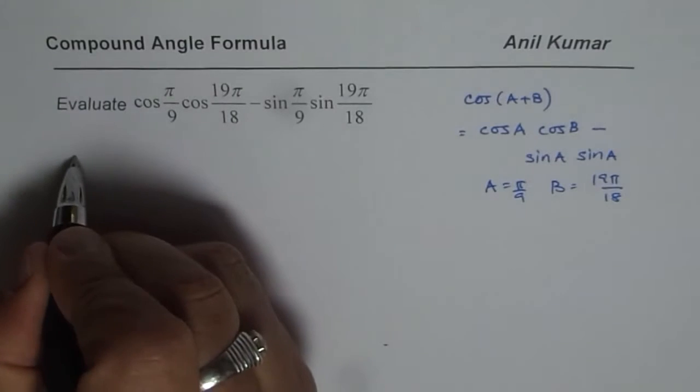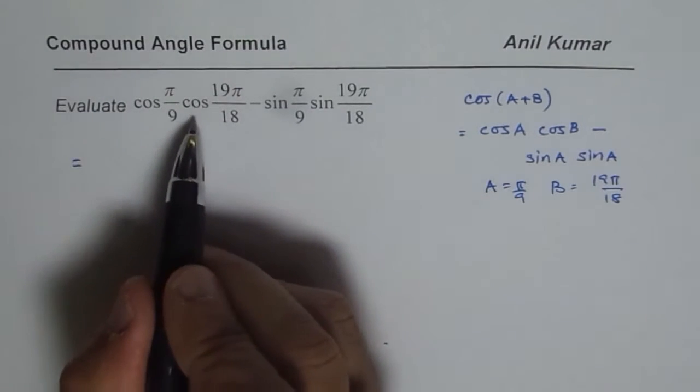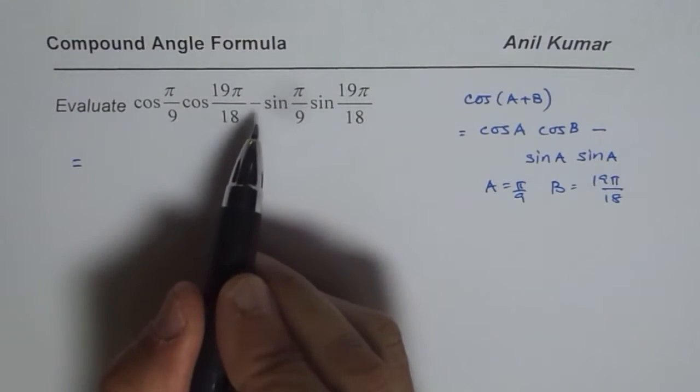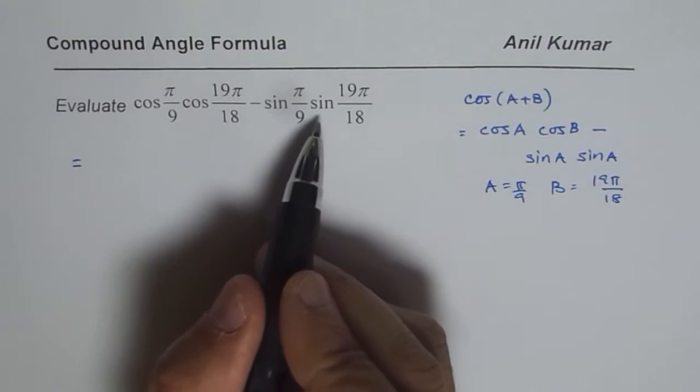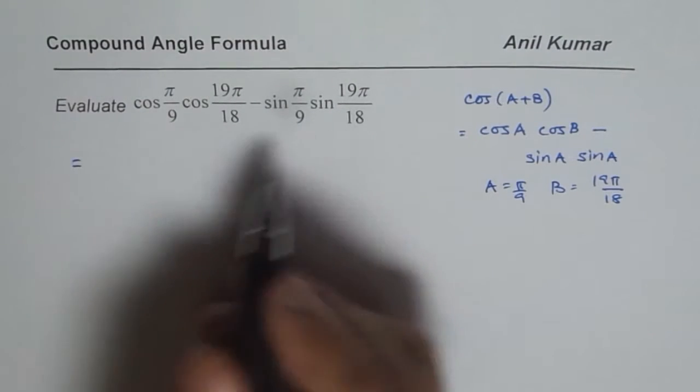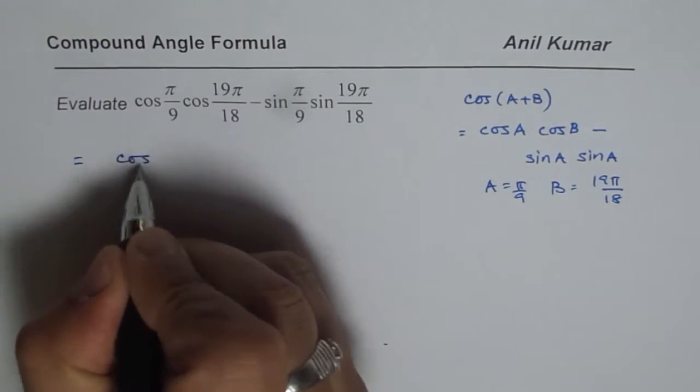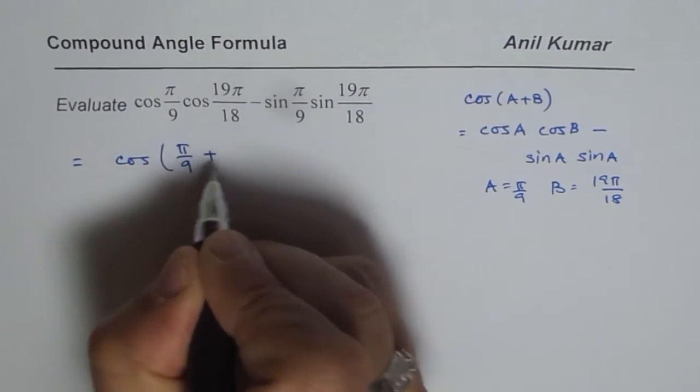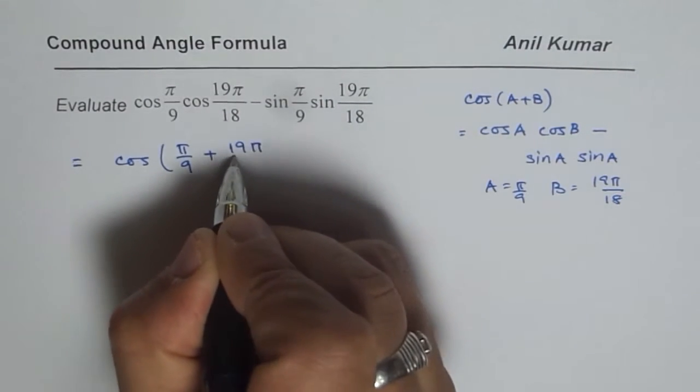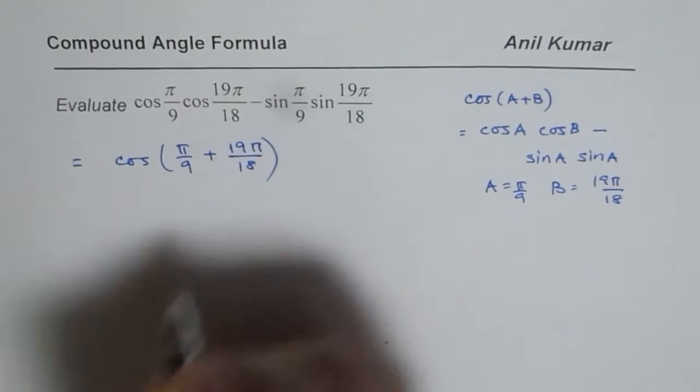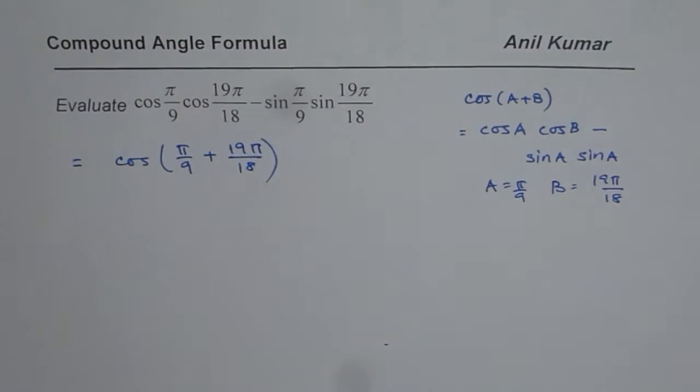So what we get here is cos π/9 cos 19π/18 minus sin π/9 sin 19π/18 should be equals to cos of π/9 plus 19π/18. So that is what we get.